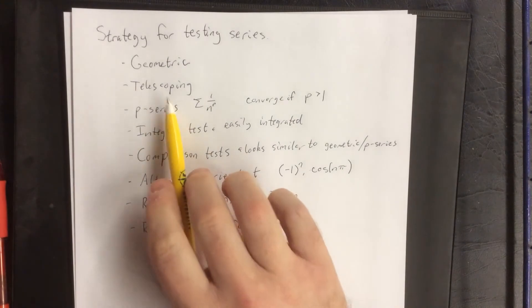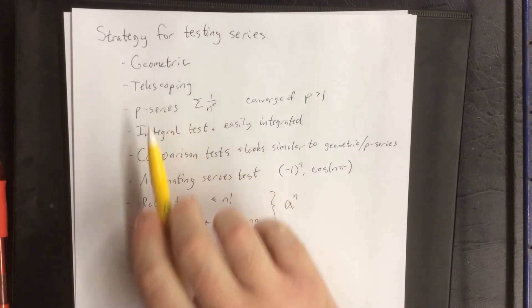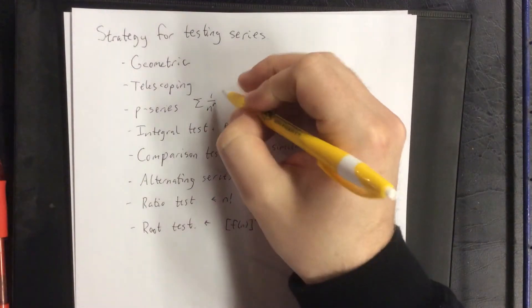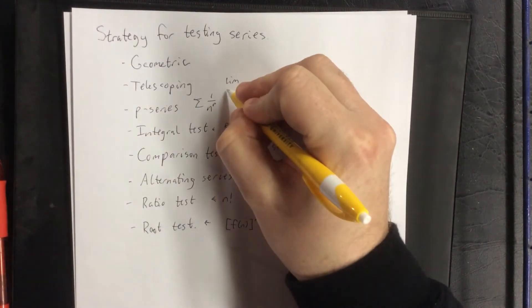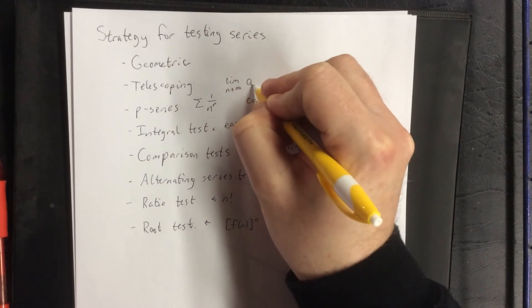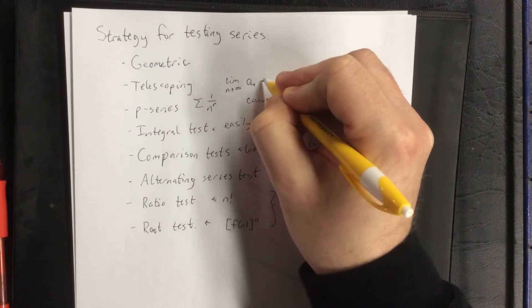Telescoping series: we had that very particular case where you put it into a form where you're getting stuff to cancel out, and then just verify that whatever piece you have that's left over is going towards zero.